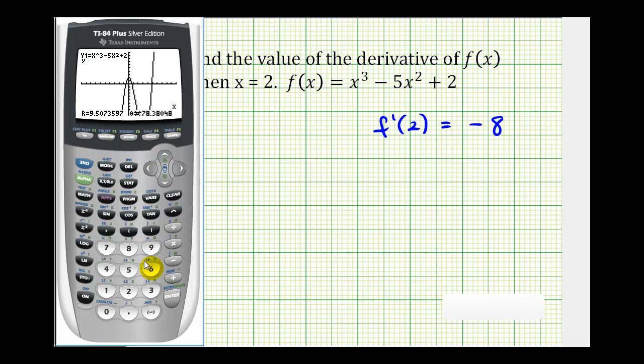Once we select option 6, we need to type in the x value of 2. So we press 2, enter, and notice how the derivative is equal to the same value that was on the home screen, which we need to recognize as negative 8.